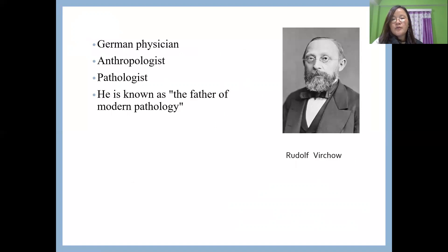Rudolf Virchow is a German physician and anthropologist who has done very great work in the area of the cell, because of which he is also called the father of modern pathology.